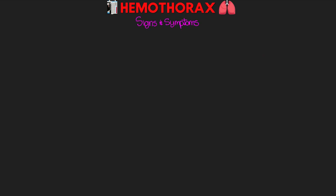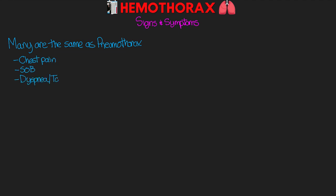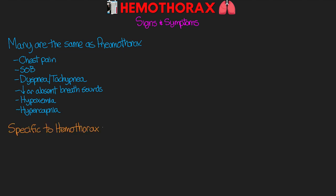Many of the signs and symptoms of a hemothorax are going to be the same as we see with pneumothorax: chest pain, shortness of breath, dyspnea or tachypnea, decreased or absent breath sounds, hypoxemia, and hypercapnia. Some signs more specific to hemothorax versus pneumothorax include tachycardia, which is a result of compensation from blood loss, but isn't necessarily indicative of a tension hemothorax since we can have tachycardia just from blood loss alone.